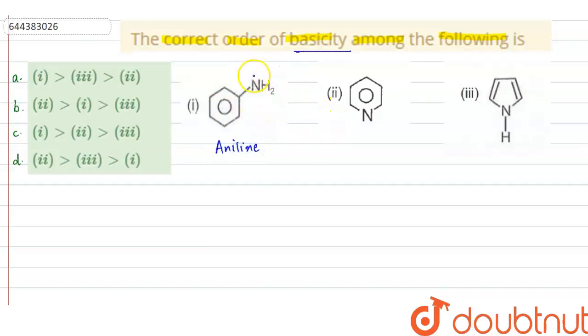Now here we know that on this nitrogen there is a lone pair which it can donate, so it can show basic character. Now, but these electrons of nitrogen, it can be delocalized over the benzene ring because it will show plus R effect.